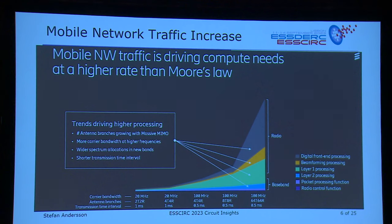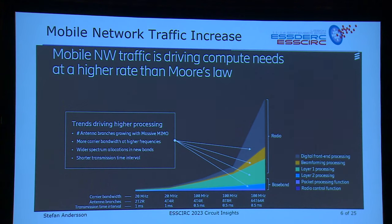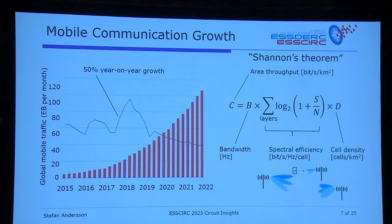Looking at mobile network traffic increase: the mobile network traffic is driving compute needs at a higher rate than Moore's law. The things behind this are the growing number of antenna branches with massive MIMO, more carrier bandwidth at higher frequencies, wider spectrum allocations in new frequency bands, and shorter transmission time intervals. What you see on the x-axis is how many antennas are in each base station, and you can see how compute needs increase. Mobile communication growth has been about 50% year-on-year, with steadily increasing exabytes per month consumed globally.